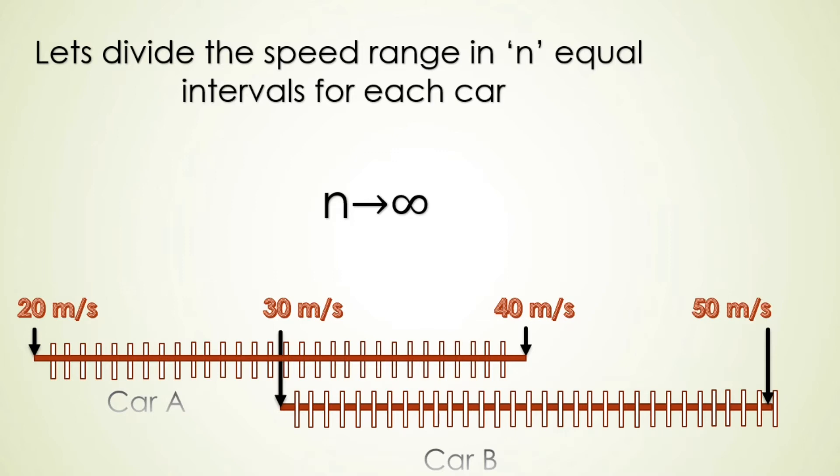Suppose in any interval 30.1 m/s is the speed it contains, then 30.1001 or even smaller speed will not lie in this interval. This interval will consist only one speed in it. Similarly, if any interval is consisting 40 m/s, then even 39.999 m/s will lie in some other interval.